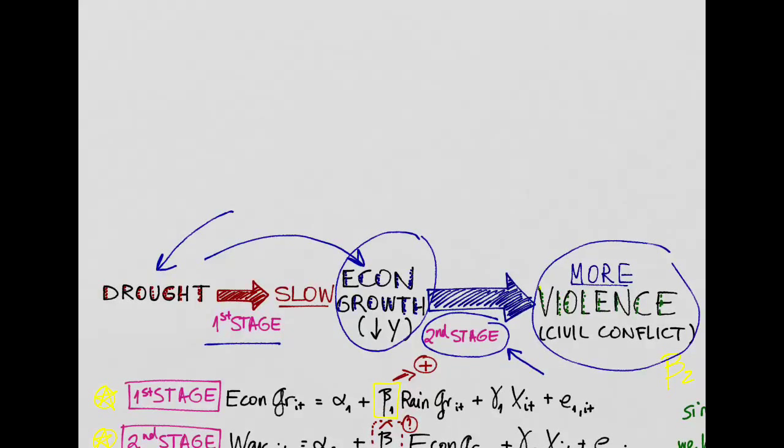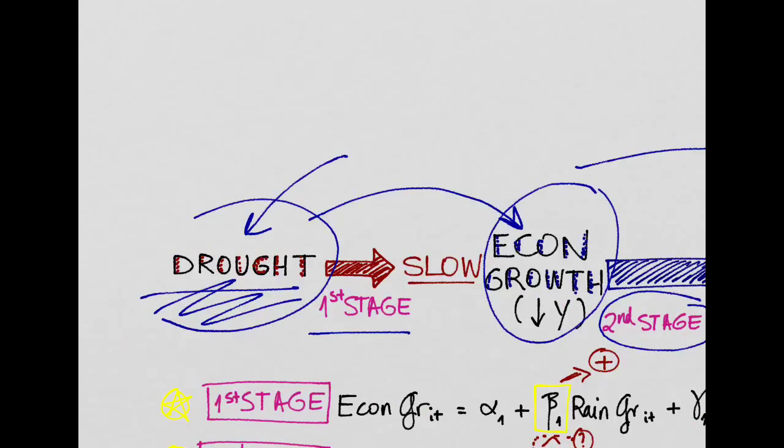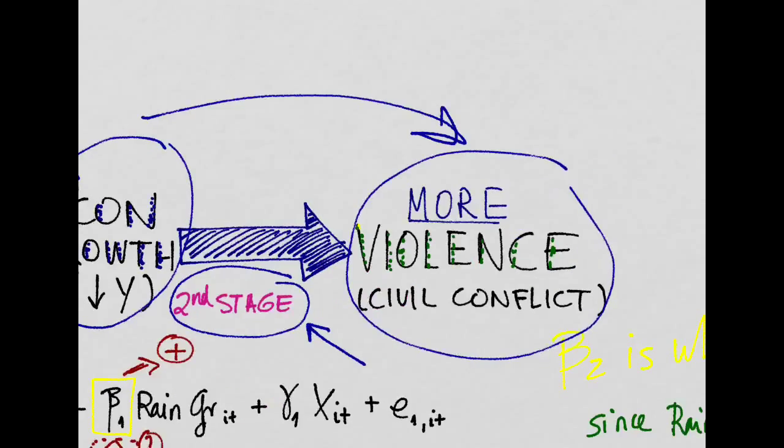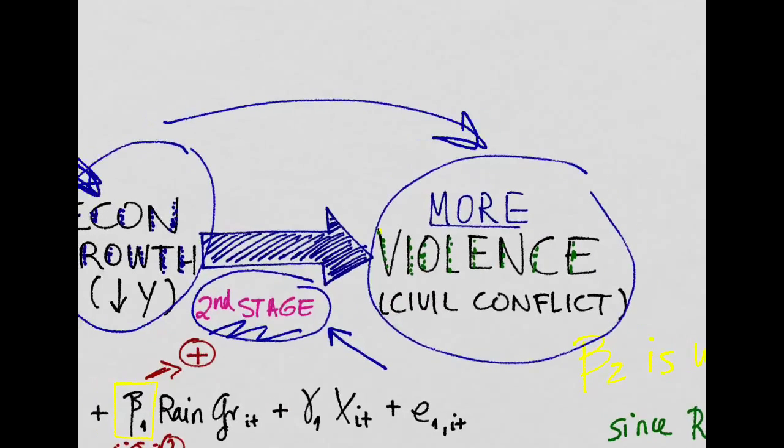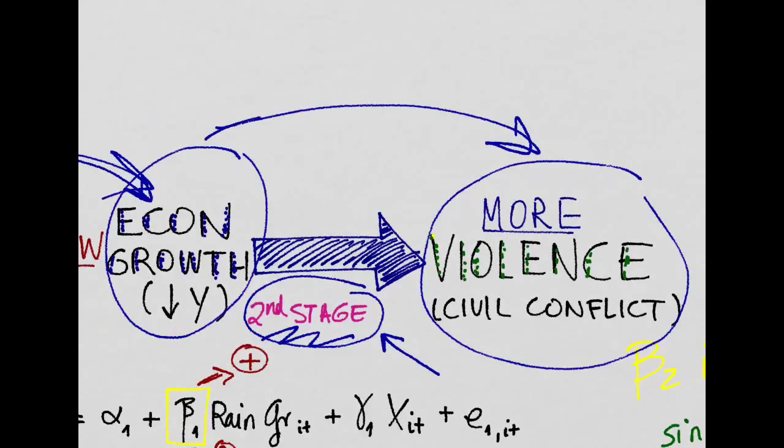Recall we were studying the causality channel that goes from economic growth to the probability of conflict. We were using rainfall variability as an instrument to assess that relationship. The reason why we can do this is because there is an impact coming from rainfall to economic growth that we call the first stage, that later on will translate into the second stage, which is the impact that slower economic growth has in terms of more violence.